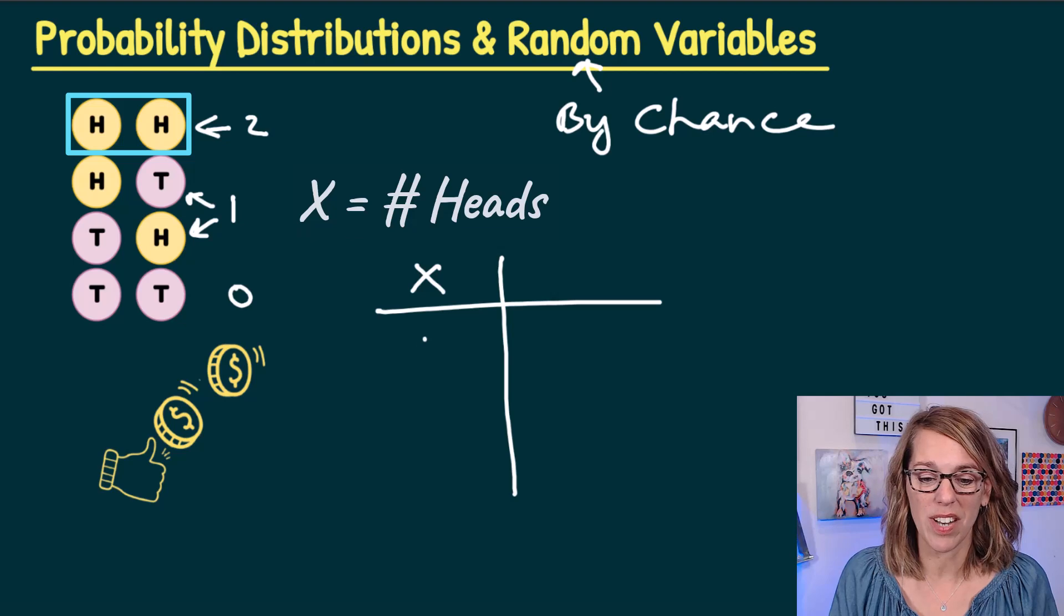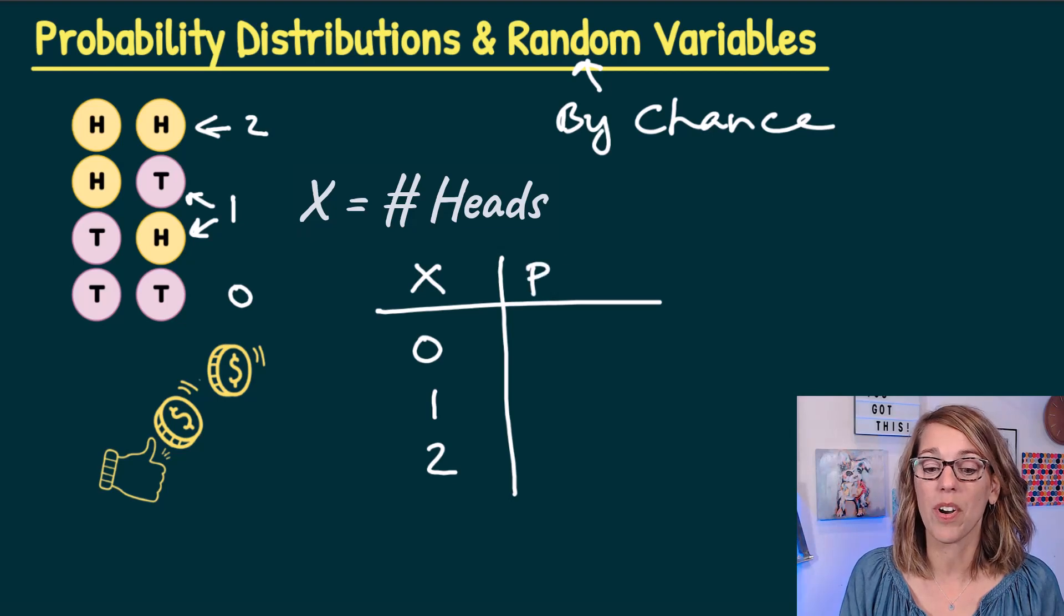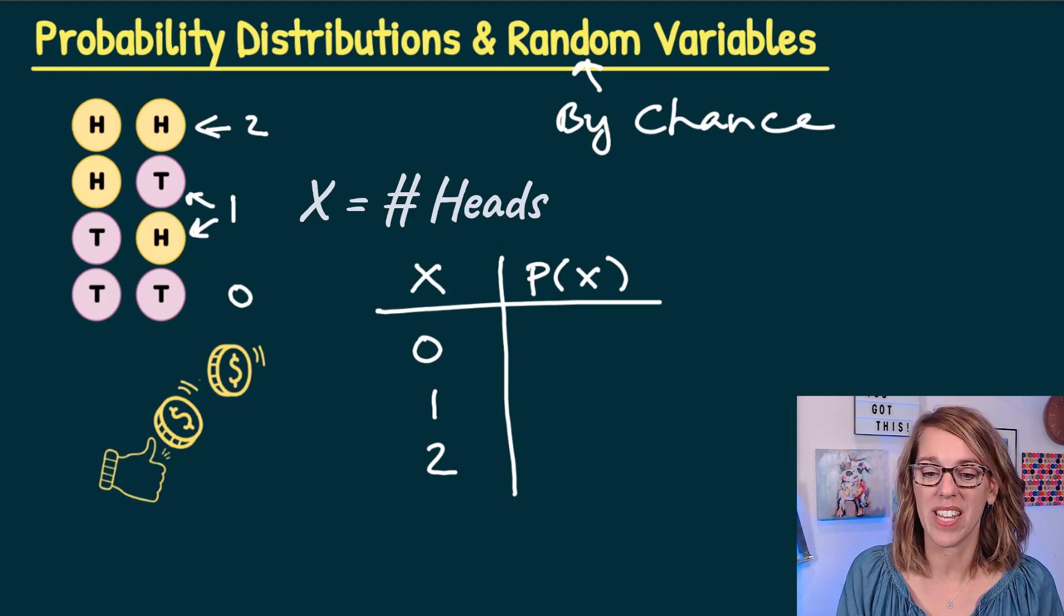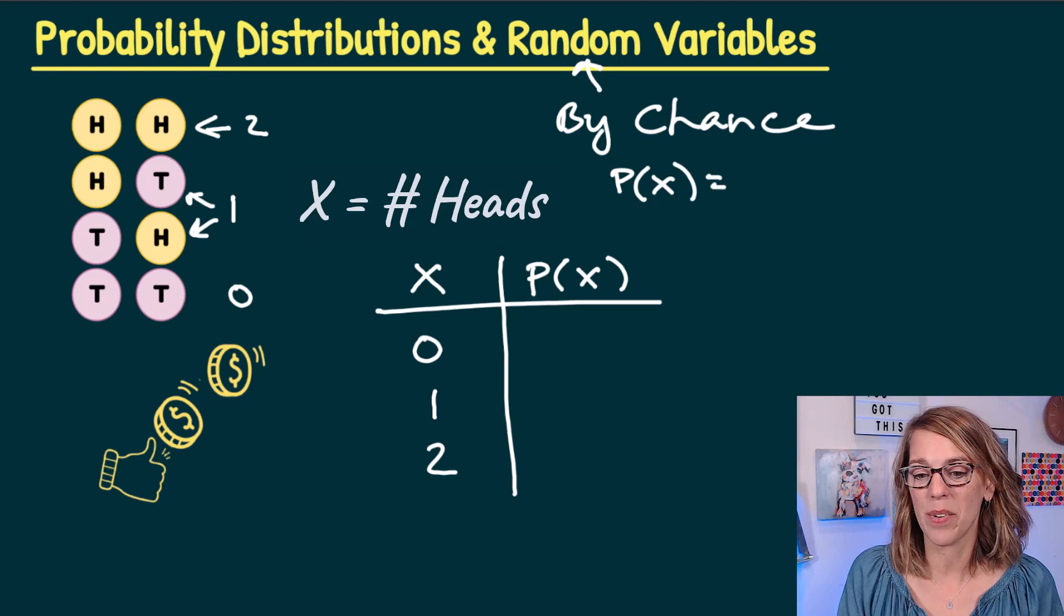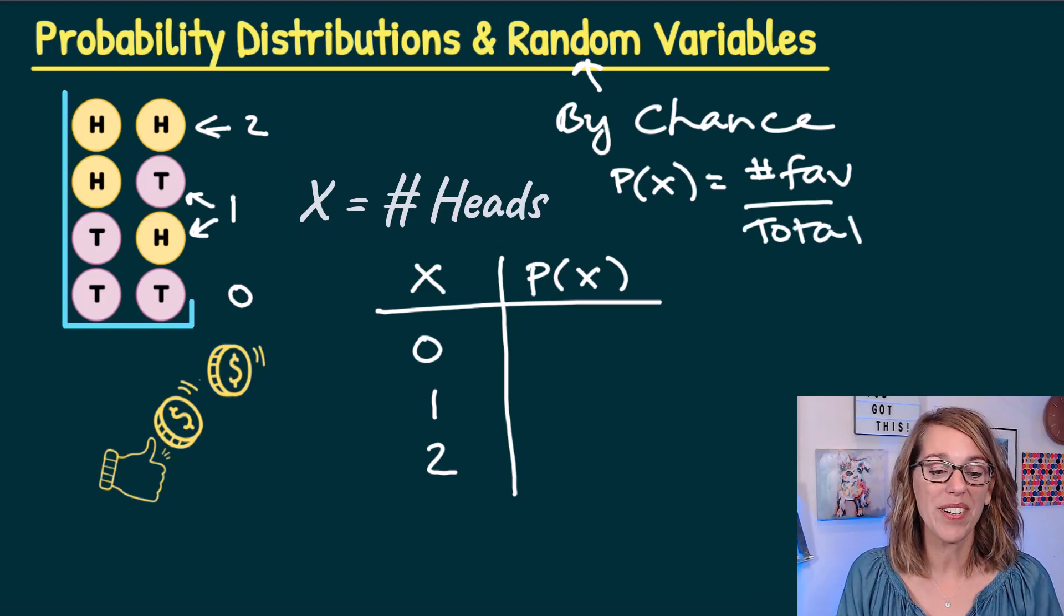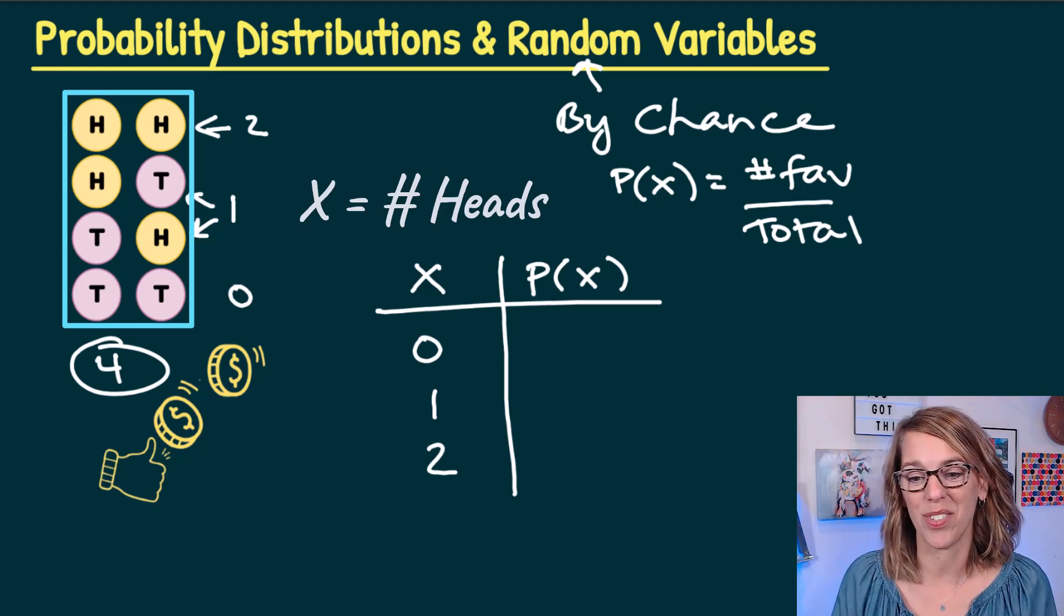So in our probability distribution, I'm going to write down the possible values that X can take on, and then I'm going to compute the probability for each of those. So the probability of X, in order to get a probability we need the probability of X is equal to the number of favorable outcomes divided by the total number of outcomes. I've got four different ways that I can end up with the outcomes on those two coins.